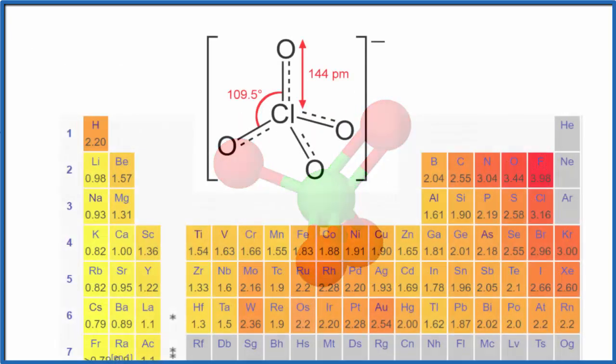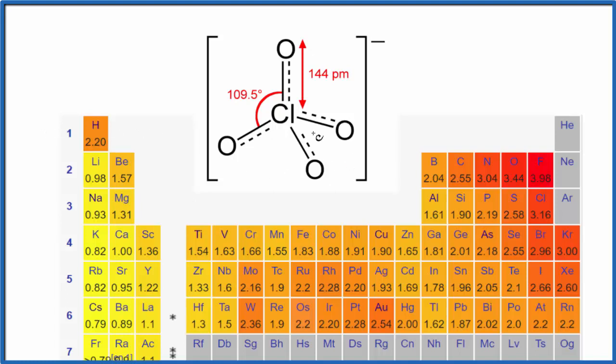Even though we had those double bonds, all of these are average in this average resonance structure for the perchlorate ion here. Each one of these is equivalent. They're pointing in opposite directions. We don't have a dipole for the ion.